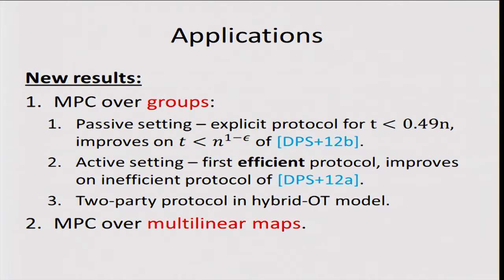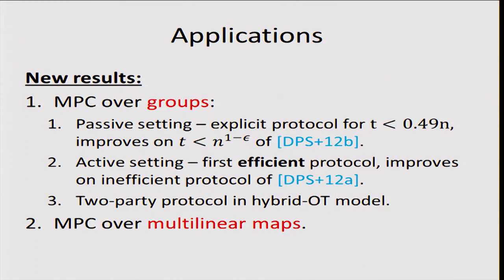We also get some new results, most notably in the setting of MPC over black box groups, studied by Desmond et al. in several beautiful works using a lot of combinatorics. We give alternate proofs that are conceptually very appealing, and they also improve results. In the passive setting, we obtain a higher threshold, and in the active setting, we obtain the first efficient protocol.